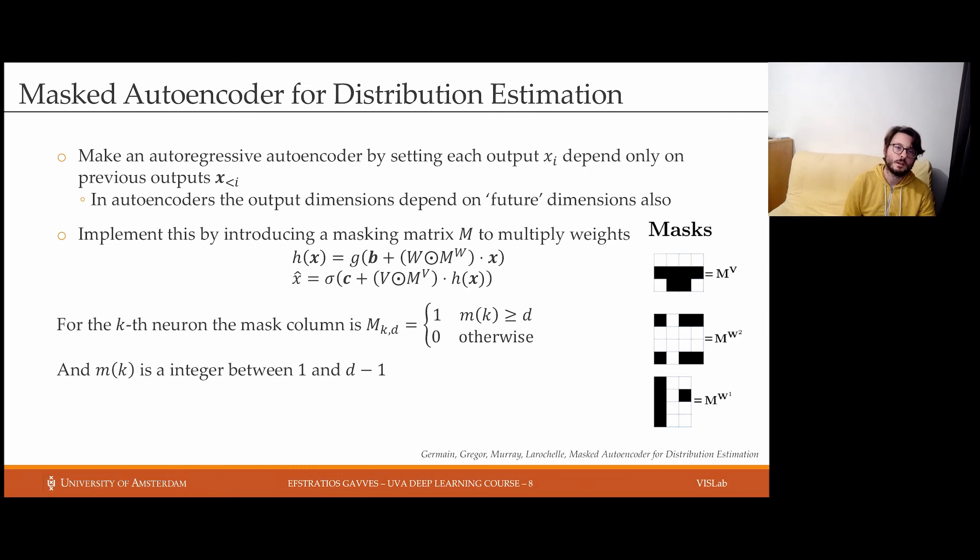Shortly after, another very interesting work was the masked autoencoder for distribution estimation by Germain and others. Their question was whether we can induce to an autoencoder structure autoregressive properties such that we can perform density estimation. And why is this challenging? Well, it is challenging because exactly of the structure of an autoencoder. So for a simple case, let's assume here this autoencoder with our input and this is the reconstruction.